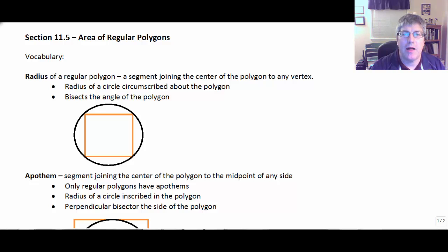So they're equilateral and equiangular. Some examples of regular polygons of course are squares, equilateral triangles. We'll work quite a bit with regular hexagons and so forth. We're going to start with some vocabulary.